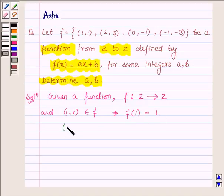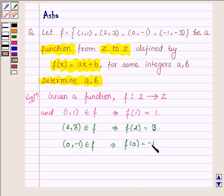Also (2,3) belongs to f. This implies f(2) = 3. (0,-1) belongs to f. This implies f(0) = -1.